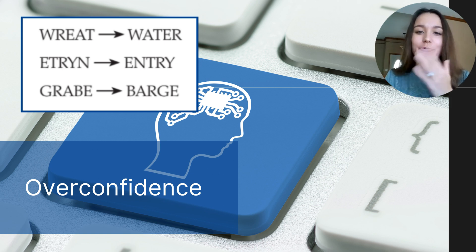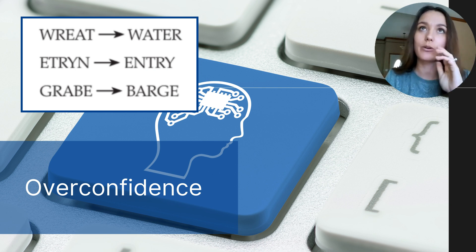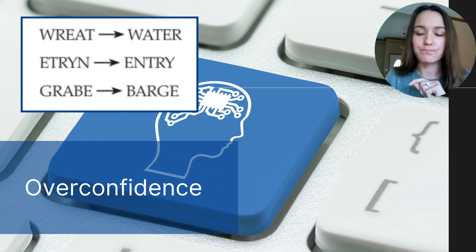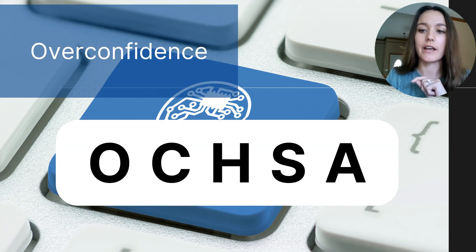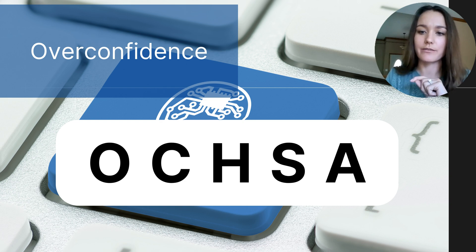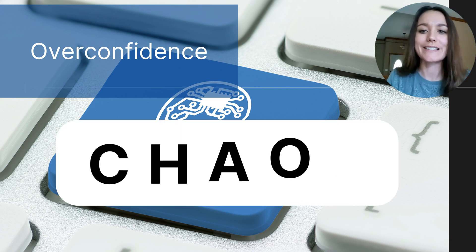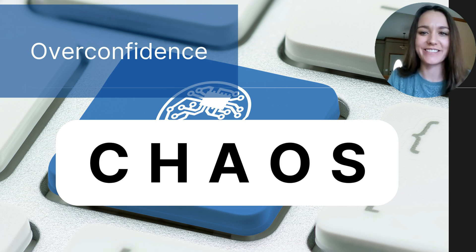But when Goranson tested people, he found it actually took most people an average of about three minutes. To test this yourself, here is one anagram: O, C, H, S, A — make a quick prediction of how long it will take you, then start a timer. If you solved the puzzle, you found that O-C-H-S-A unscrambles into the word CHAOS. Were you overconfident in your prediction? This happens a lot.